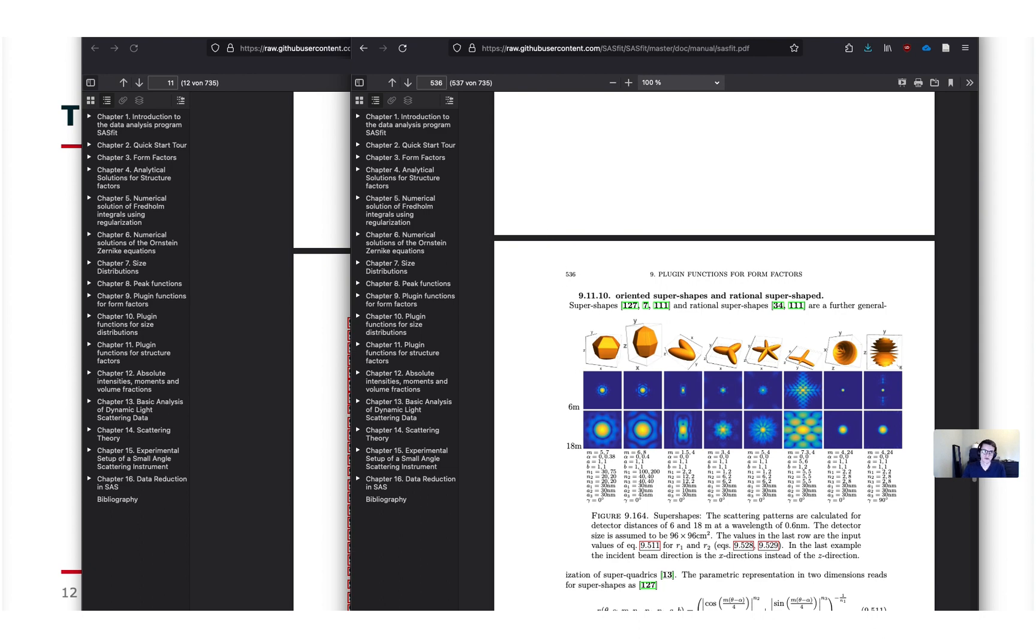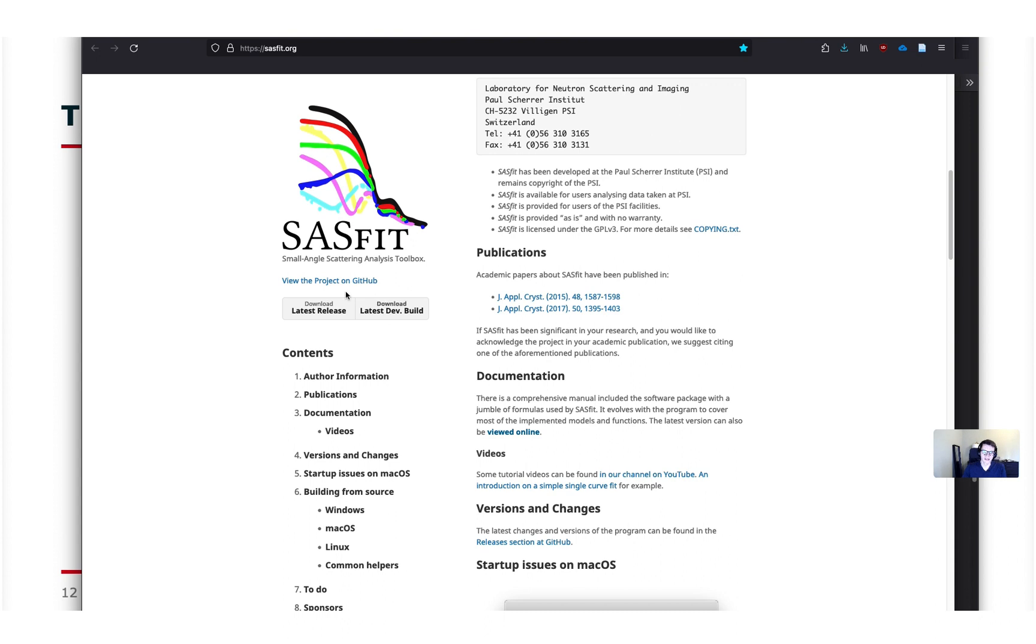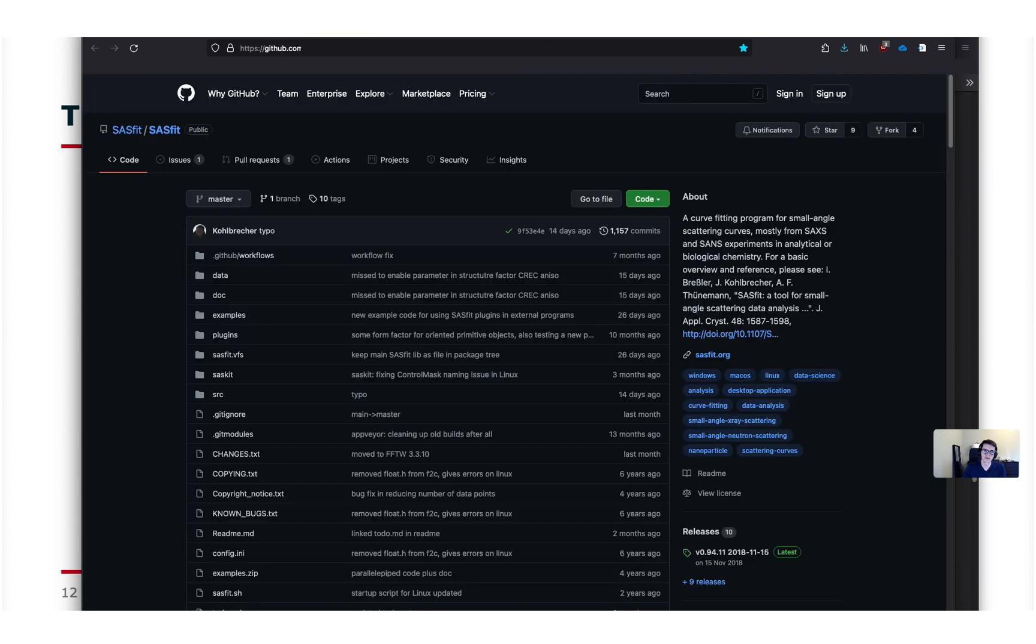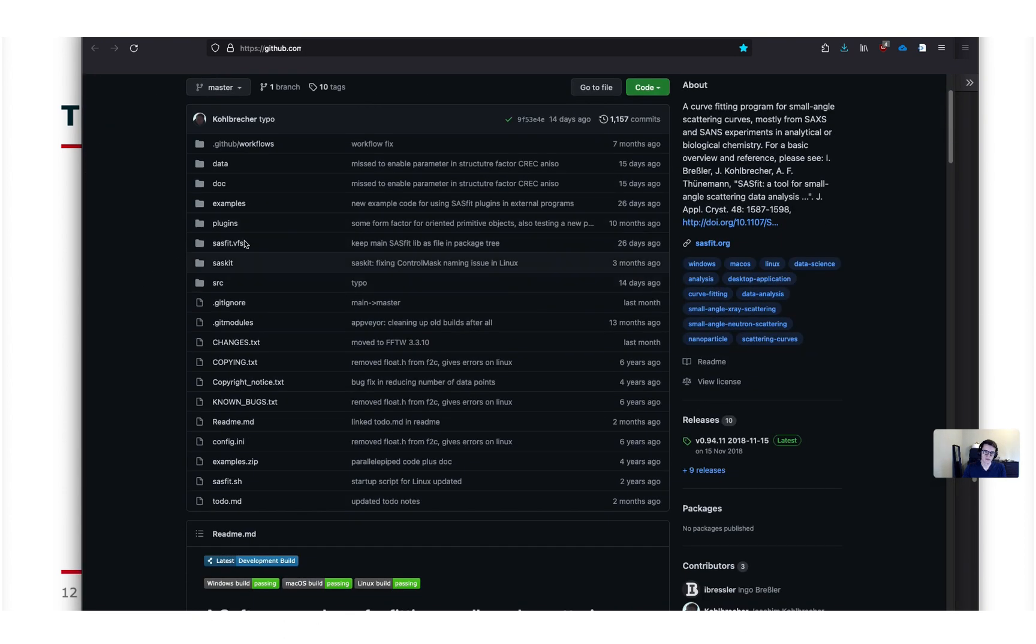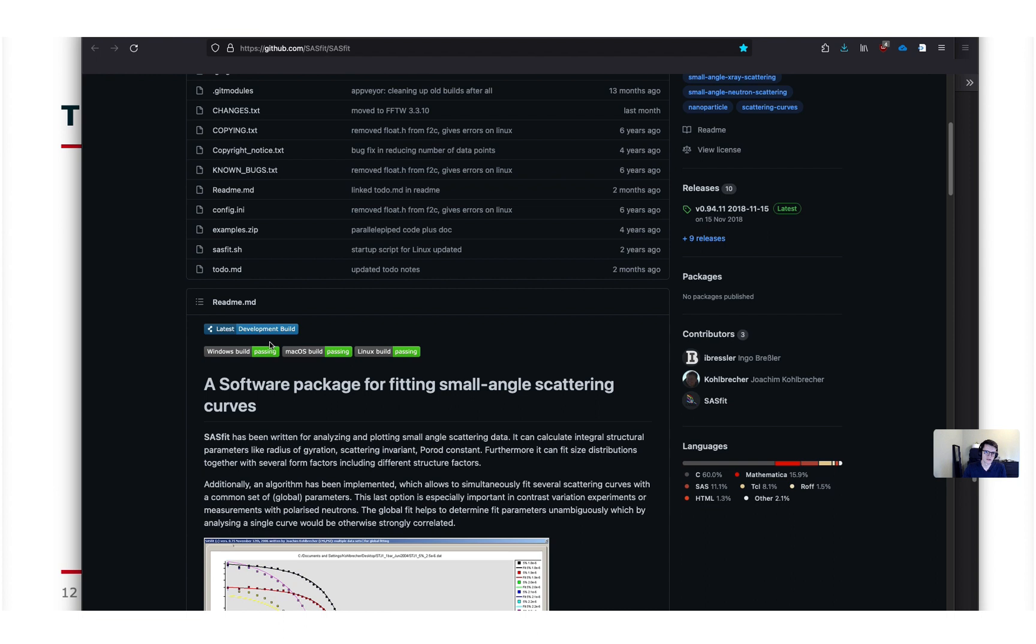So the last current version of the program can also be found of course on its web page sasfit.org I showed earlier. And here we can visit the git project page. It's basically the page hosting the full source code of the program. And there are also some links again to the automatically built development versions which get built with every single change of the source code. So at the moment the latest stable release is a bit old by now. But there are more recent development builds.